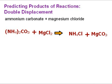Then we go ahead and balance that equation. This is a pretty straightforward one to balance — we only need a 2 in front of the ammonium chloride. Now, just because we can write a balanced equation for this doesn't mean the reaction actually happens. What we need to do is look at those products and see if they are going to be soluble or not soluble.